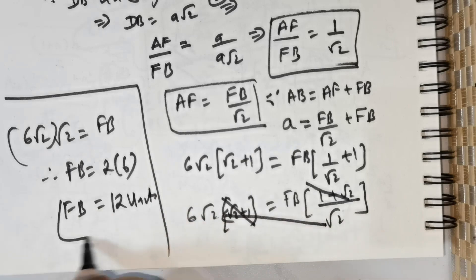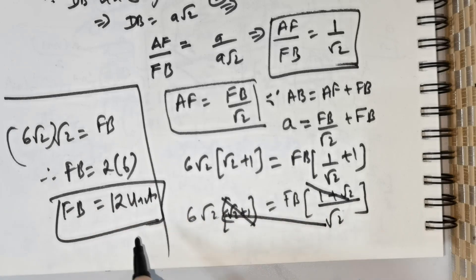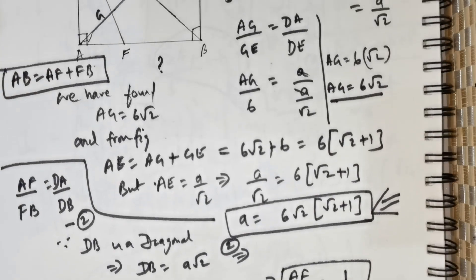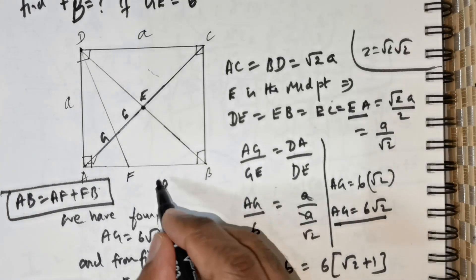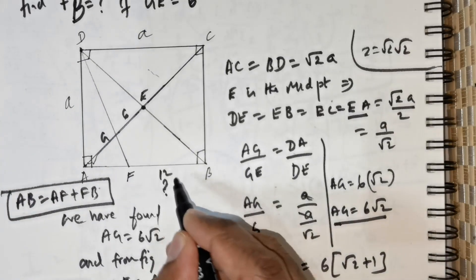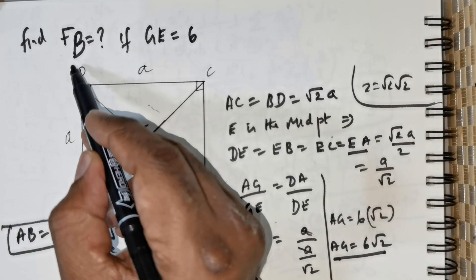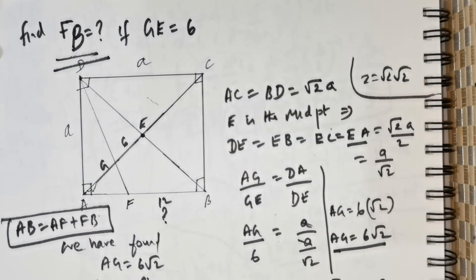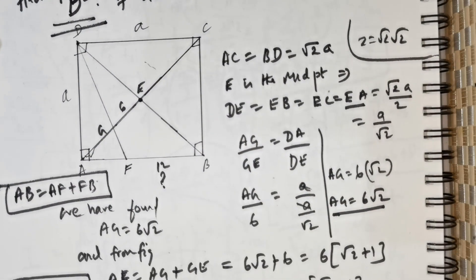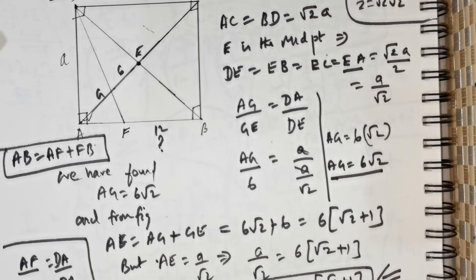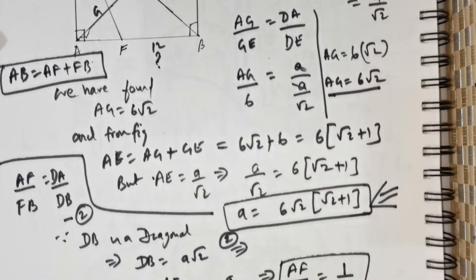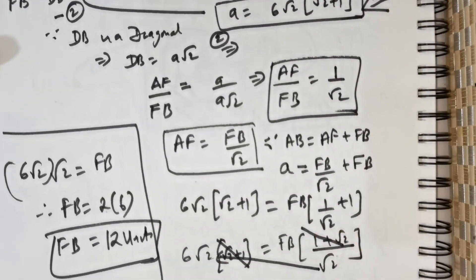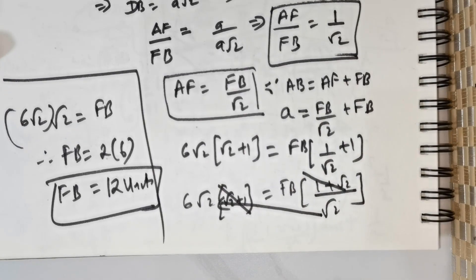So FB is 12 units. This is exactly what is required, and that is the end of this particular question. I hope you all enjoyed this question. Until we meet again, goodnight.